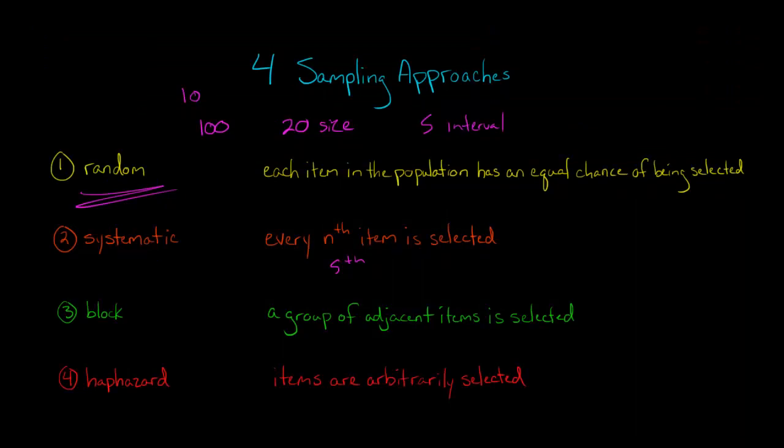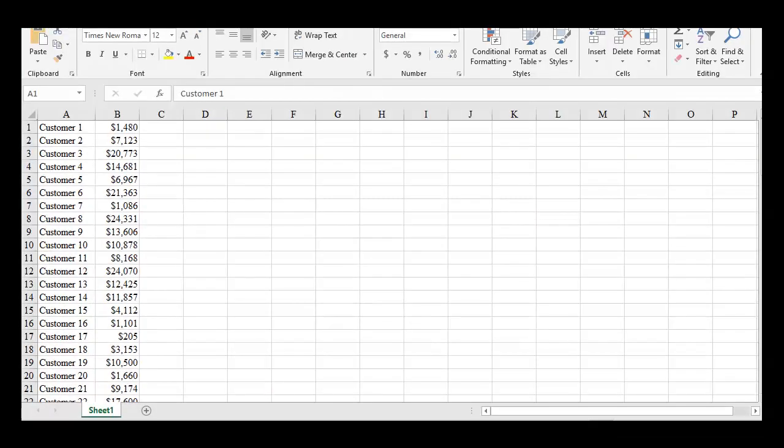And then a haphazard sample would be just arbitrarily taking customers and saying, we'll take customer 3, customer 10, customer 15, and so forth. So it's just completely arbitrary. You're trying, you're not looking at the balance and saying, oh, I want this balance. You're just picking numbers.